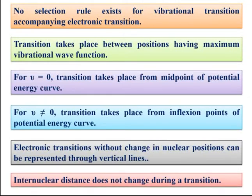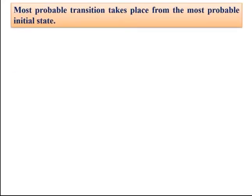The internuclear distance does not change during a transition. So this is also a condition that if an electronic or vibrational transition takes place, the distance between the two nuclei won't change. The most probable transition takes place from the most probable initial state — the energy level having the highest population will be the most probable energy level showing the transition.